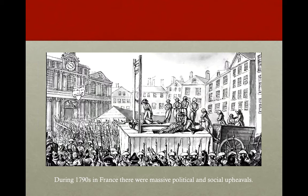In 1794, Benjamin met Germaine de Staël, a leading intellectual who was to have an enduring influence on his life. They moved to Paris in 1795 during a tumultuous period of massive political and social upheavals in France. Living through this period shaped Benjamin's thought. Although he was sympathetic to the cause of the revolutions, he began to question why things were going so drastically wrong in France, leading him to develop his theory comparing liberty in ancient times with modern times. He felt this distinction was necessary because failing to recognize them as separate ideas leads to great troubles, such as the French Revolution itself.